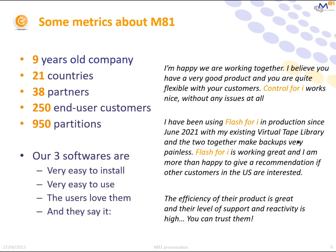A few facts about M81: we are nine years old, but we already work in 21 countries all over the world — mostly in Europe, but also in North and South America. We sell through a network of about 38 partners and have more than 250 end customers and now over a thousand partitions. Our products are very easy to use and easy to install, and our customers say so. You can find more examples on our website.